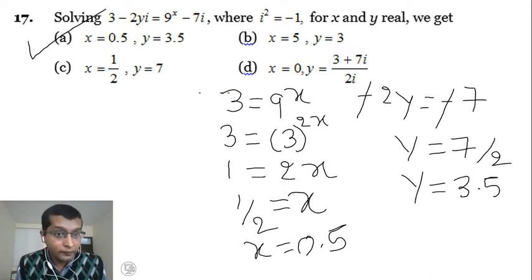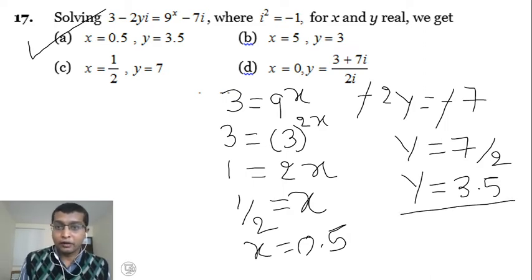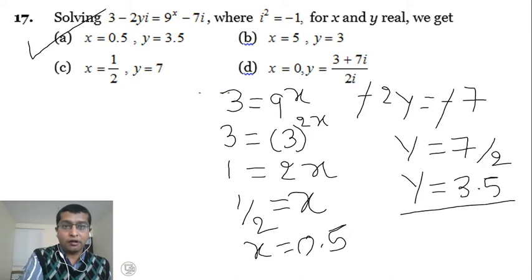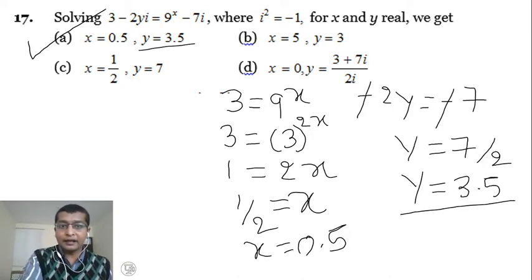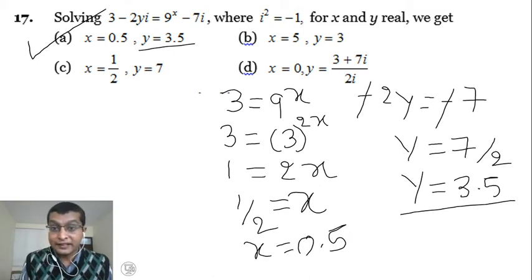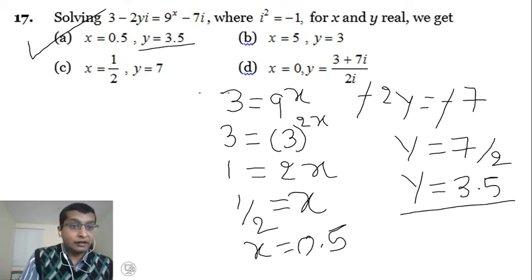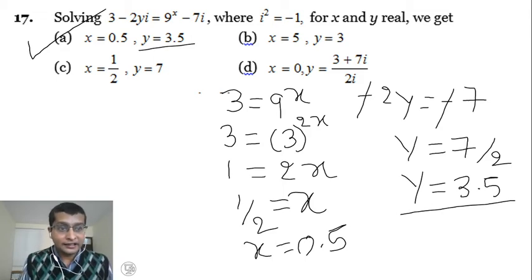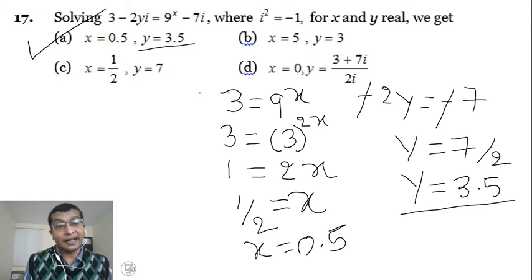One more hint: y equals 3.5. Search for this value in the options. In the remaining options, y equal to 3.5 is not found elsewhere. So no need to calculate further; directly we can say option A is the right answer.